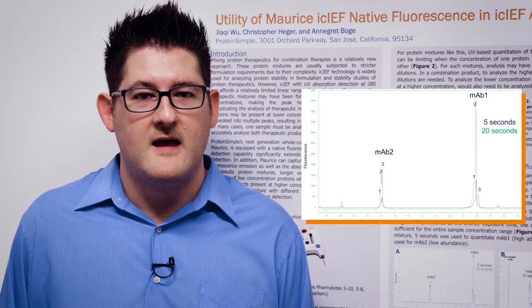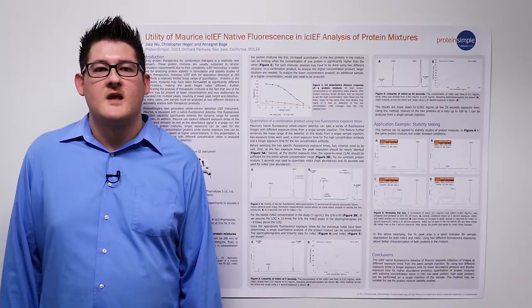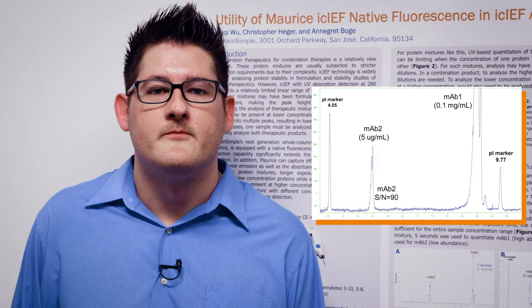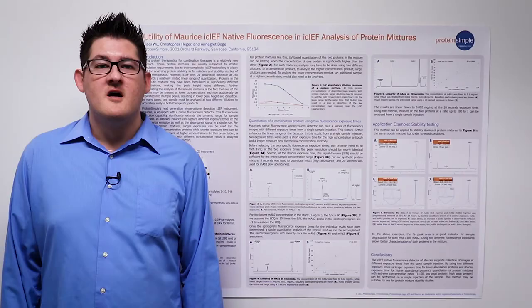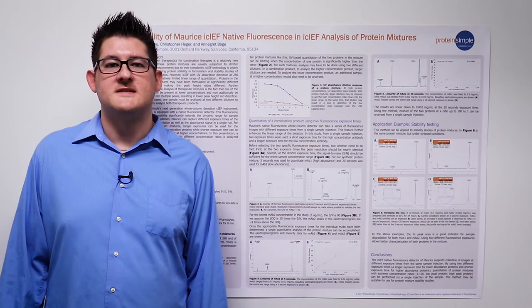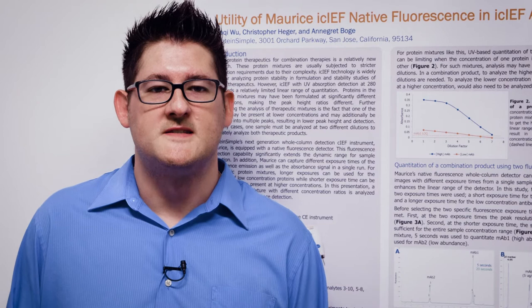First, it's important to make sure that at both fluorescence exposures being used, the resolution of the antibodies remains unchanged. Second, as shown in Figure 3b, using the shortest exposure time, the signal-to-noise should be sufficient for the entire test range. As we show for MAB2, at the 5-second exposure, the signal-to-noise ratio is 90. For a model protein mixture moving forward, we used a 5-second exposure to quantify the high-concentration MAB1 and a longer exposure of 20 seconds to quantify the low-concentration antibody MAB2.